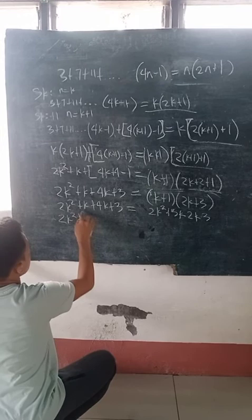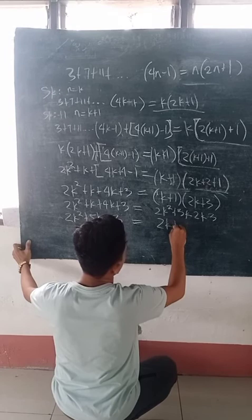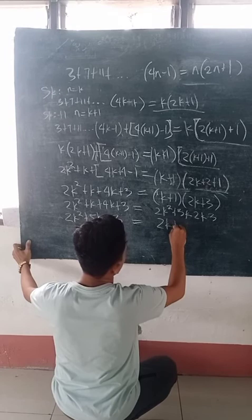So it will be 2k squared plus 2k plus 1k plus 4k is 5k, plus 3. This is equal to 2k squared plus 3k plus 2k equals 5k, plus 3. So it is the same — it is equal to 2k squared plus 5k plus 3. Both sides are equal.